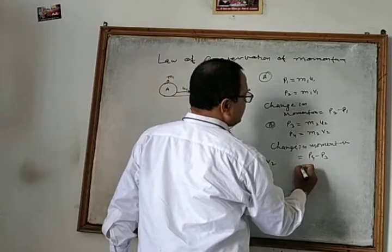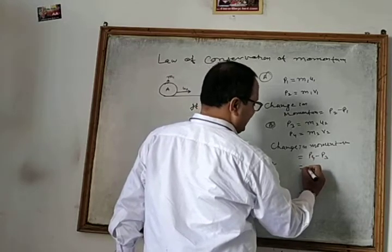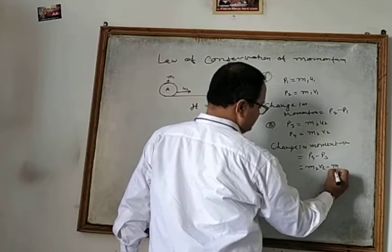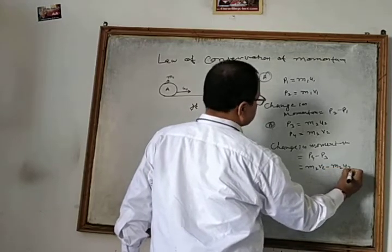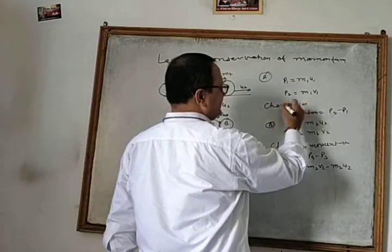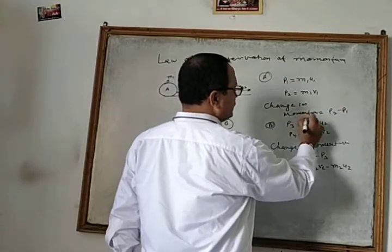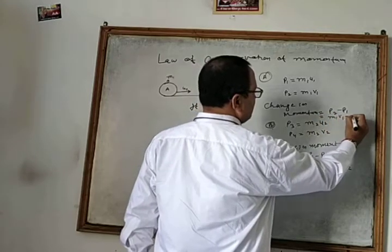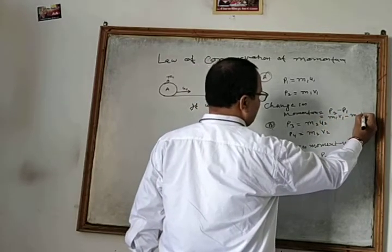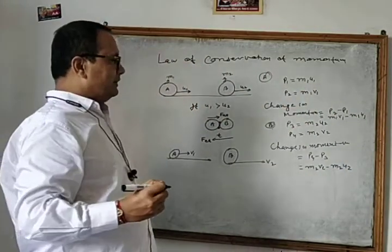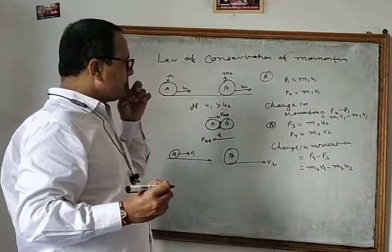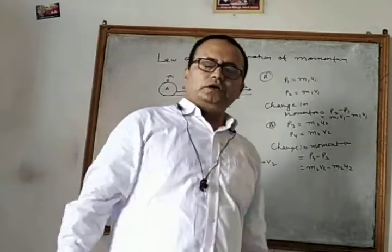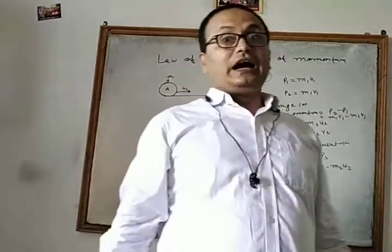So P4 minus P3 can be written as M2V2 minus M2U2. Similarly, the change in momentum of A can be written as M1V1 minus M1U1. Total momentum before collision is equal to the total momentum after collision, unless external force acts.